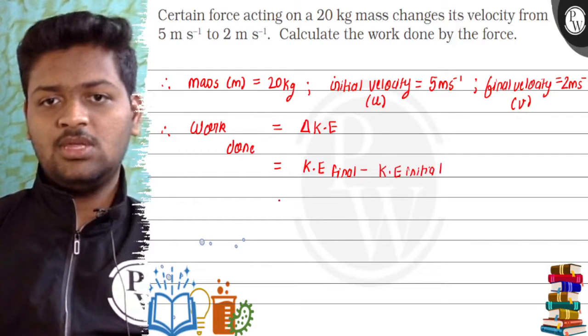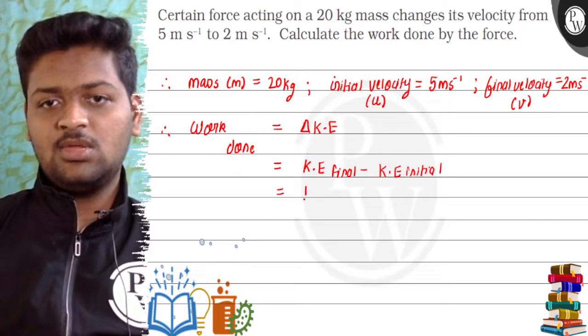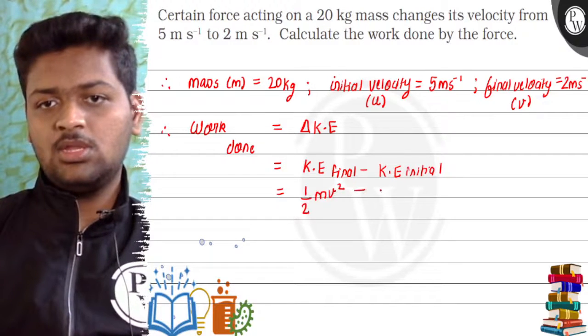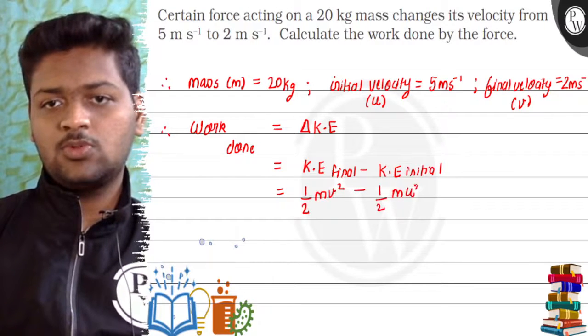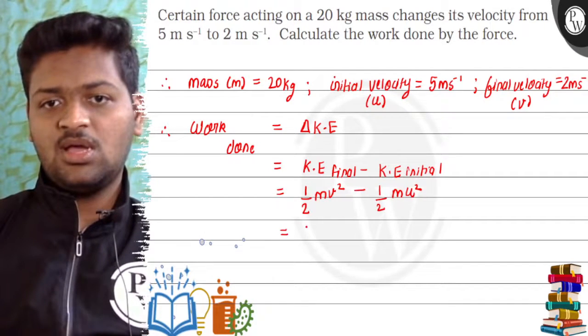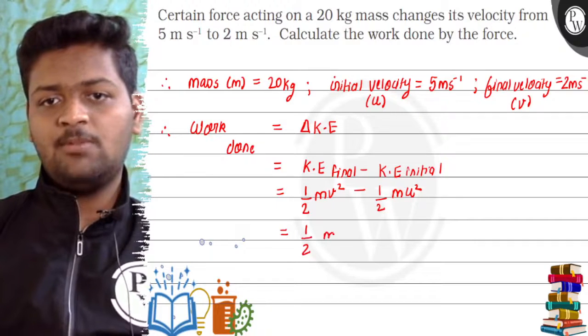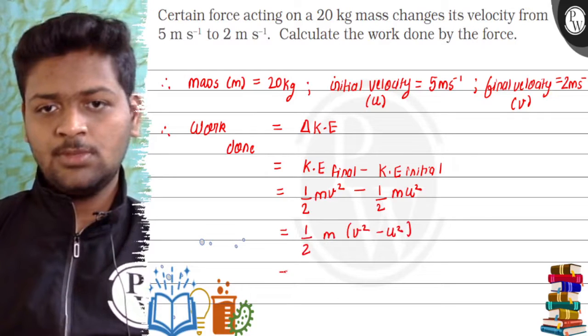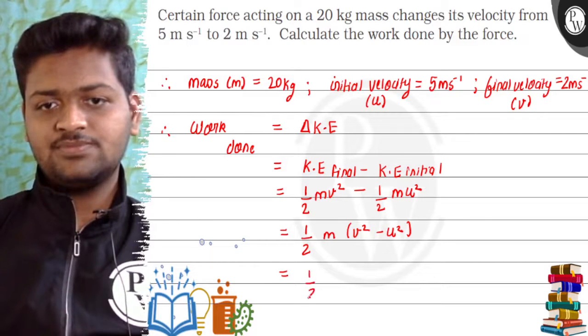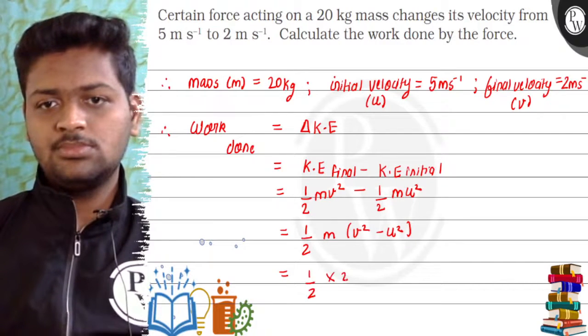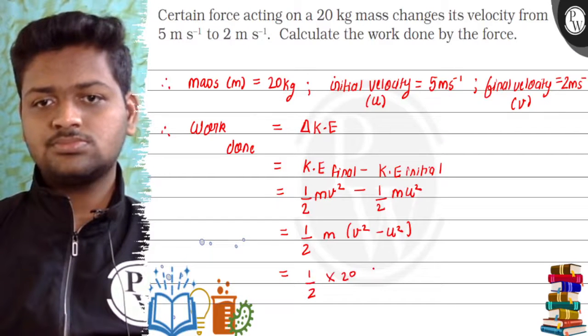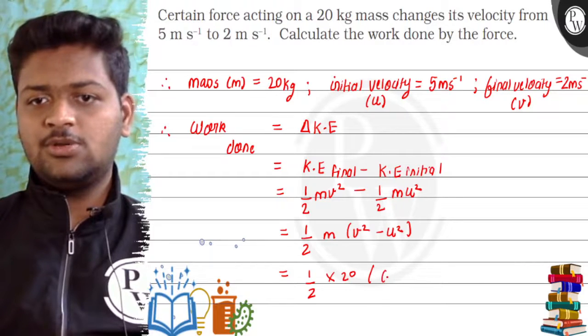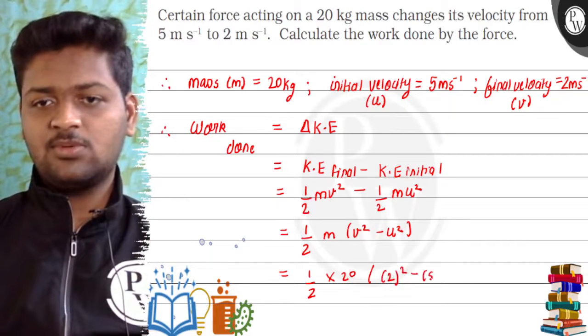So kinetic energy final will be half m v squared and initial will be half m u squared. This will be half m times v squared minus u squared. That will be half into 20 kg, final velocity 2 squared minus 5 squared.